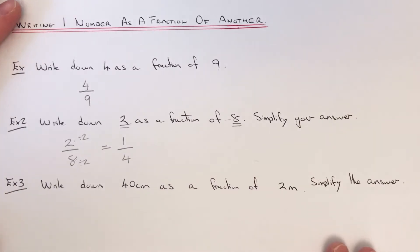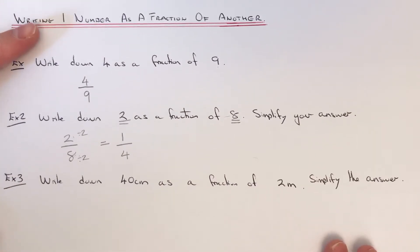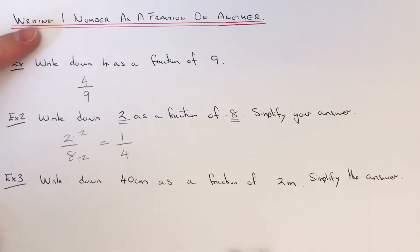For our final example, we've got to write down 40 centimeters as a fraction of 2 meters and simplify the answer. This one's a little bit harder than the other two questions because we've got one measurement in centimeters and another measurement in meters.